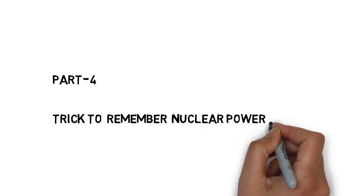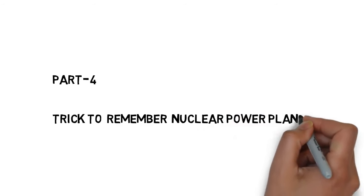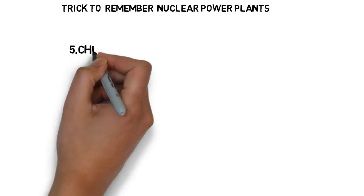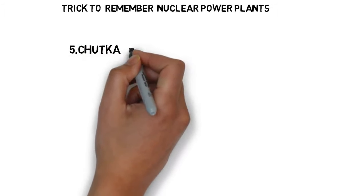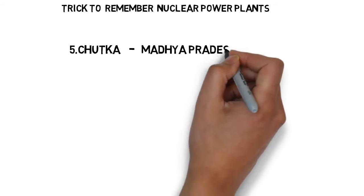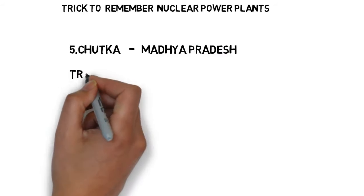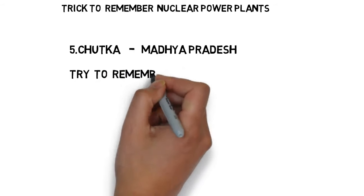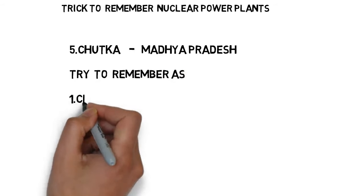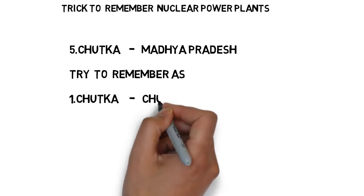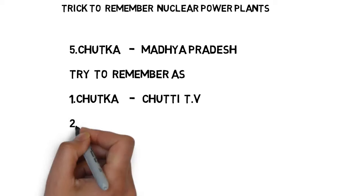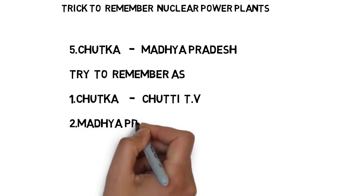The fifth nuclear power plant is Chutka Nuclear Power Plant, located in Madhya Pradesh. Now, how do we remember this name and its place? Let us see the trick. Try to remember 'Chutka' as 'Chutty' — both sound similar, and the first three letters C-H-U are the same.